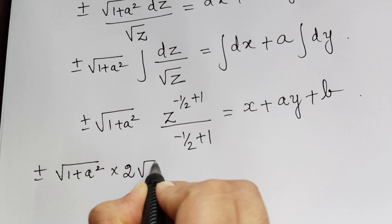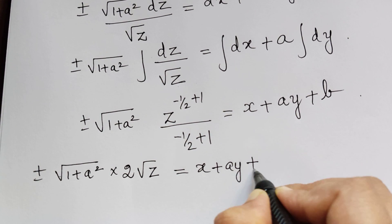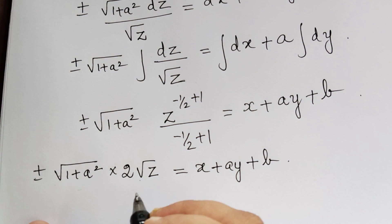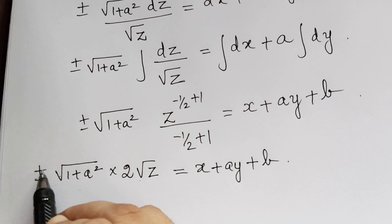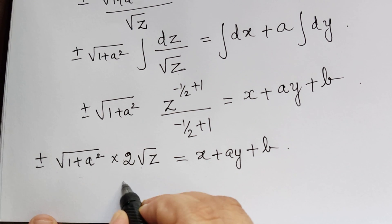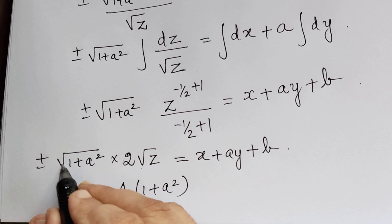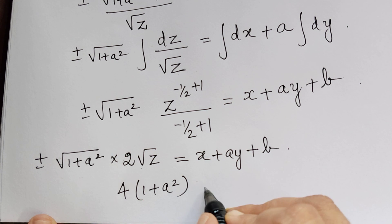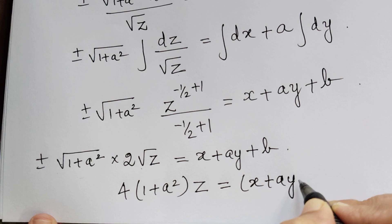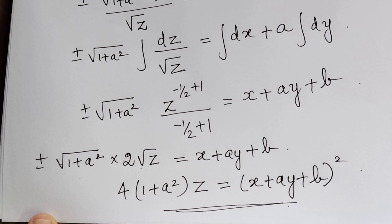So we get plus or minus square root of 1 plus a square times 2 square root of z equal to x plus ay plus b. Now in order to get rid of the square roots, we square both sides. Plus or minus becomes plus after squaring, giving us 4 times 1 plus a square times z equal to x plus ay plus b, whole square. This is the required solution of the given problem.